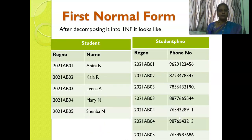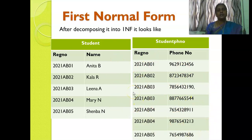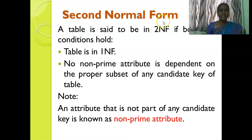We have to decompose the table. After decomposing, the previous table is split into two tables: one with register number and name, and another with register number and phone number. There are no multiple values in either table, so now we can say that it is in first normal form.